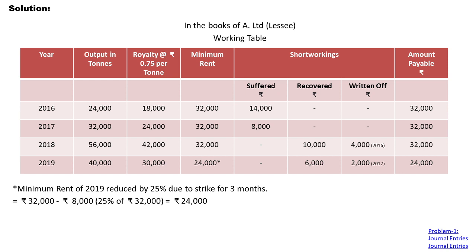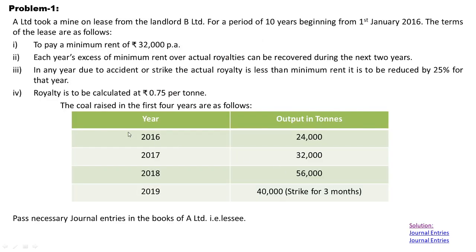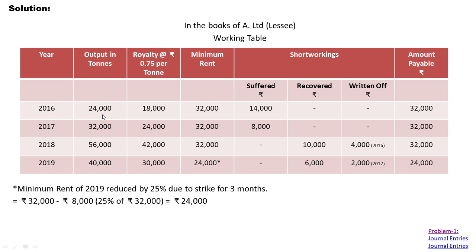From the working table we then pass the journal entries. Now we are going to prepare this working table. For the first year, 2016, in the second column we record the output in tons — which is 24,000.